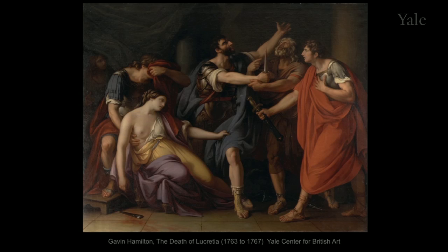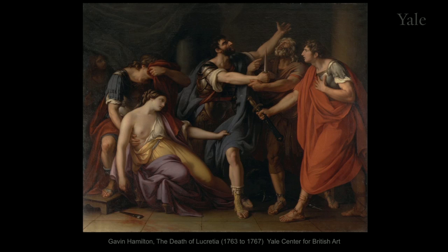This week, we're going to look at a picture by another artist from north of the Alps, Gavin Hamilton, a Scot, who came to Rome to study 150 years after Rubens did. He stayed on to paint subjects from Greek and Roman literature. Before I say more, let's just spend a minute or so looking at the picture.